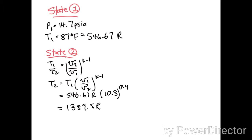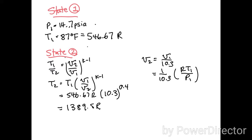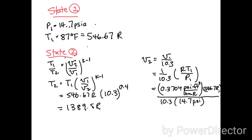I'll also find the volume at state two using the ideal gas law. We know v2 equals v1 divided by 10.3, and setting (1/10.3)v1 equal to RT1 over p1. With T1 and p1 known, the psi units cancel and Rankine cancels, leaving cubic feet per pound mass. The result is v2 = 1.337 cubic feet per pound mass of air.